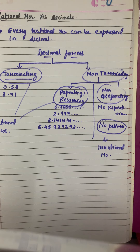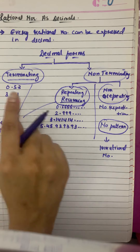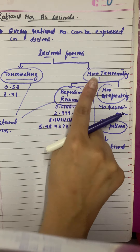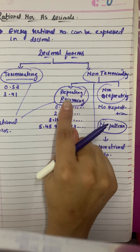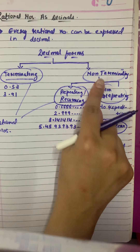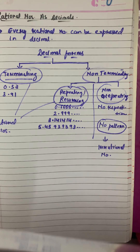I hope this video helps you understand the difference between terminating decimals, non-terminating repeating or recurring decimals, and non-terminating non-repeating decimals. Thank you.